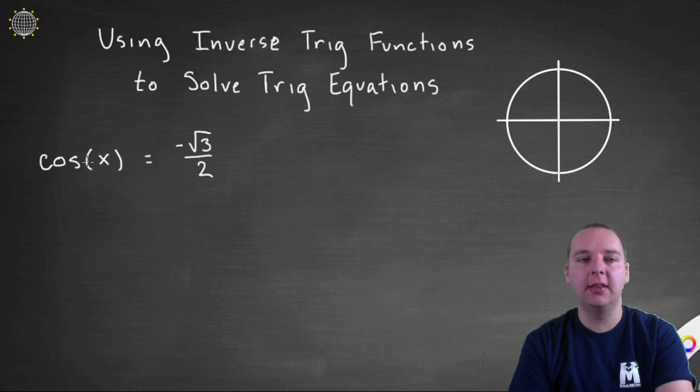I suppose we could take the arc cosine or inverse cosine of both sides and solve for x that way, but you would likely say that's a little overkill, isn't it? We don't really need to do all that and I would agree with you.